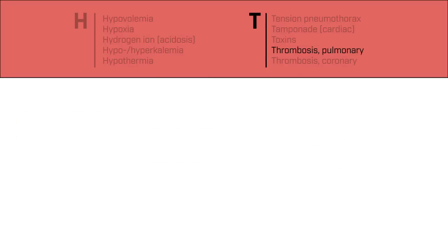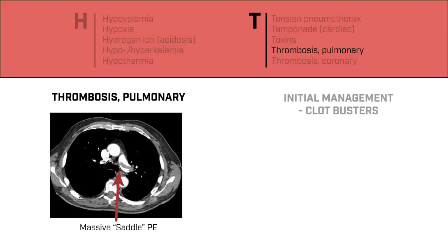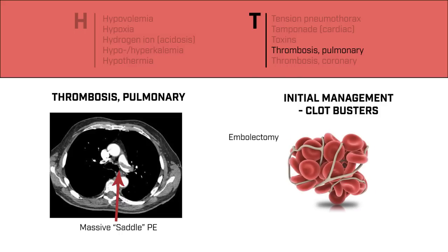A pulmonary embolism can lead to cardiac arrest, especially if they are massive. Large PEs obstruct right ventricular output, leading to decreased cardiac output and arrest. History is important if it can be obtained from a family member or friend, because prior to arrest, the patient may have had signs and symptoms of shortness of breath, chest pain, decreased oxygen levels, and may even have presented with a cough. If an EKG is obtained prior to the arrest, it will most commonly show signs of sinus tachycardia. Treatment is usually embolectomy, fibrinolytic therapies, and anticoagulant therapy.